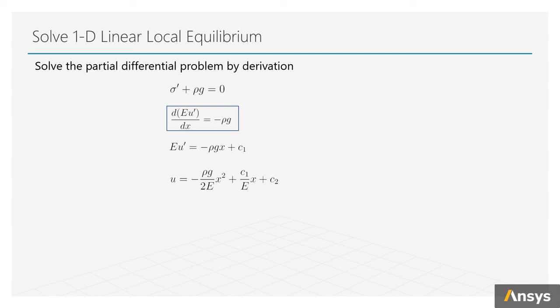They are decided by boundary conditions. Boundary conditions tell us that sigma(L) equals to P and u(0) equals to 0. By using these two equations, we can find C1 and C2.